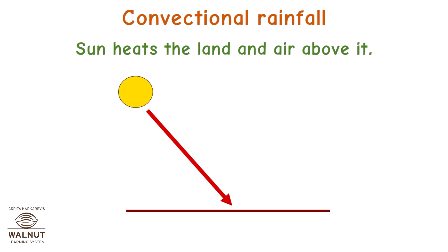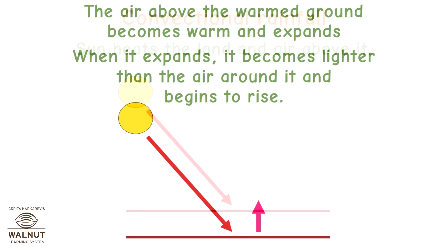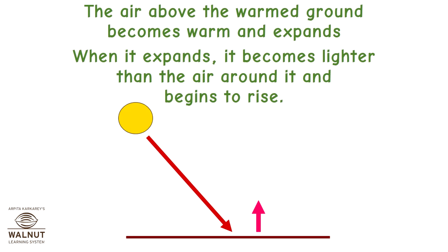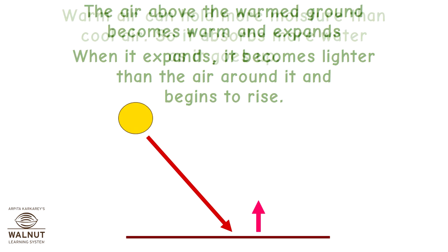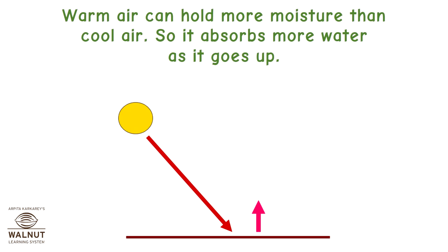Convectional Rainfall. The sun heats the land and the air above it. The air above the warmed ground becomes warm and expands. When it expands, it becomes lighter than the air around it and begins to rise. Warm air can hold more moisture than cool air, so it absorbs more water as it goes up.